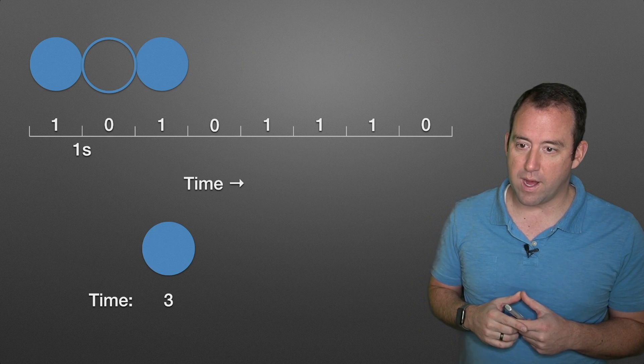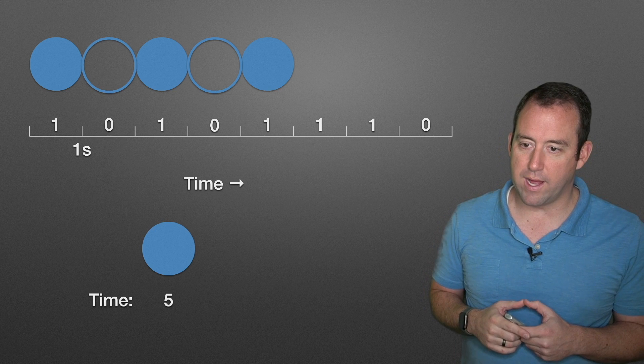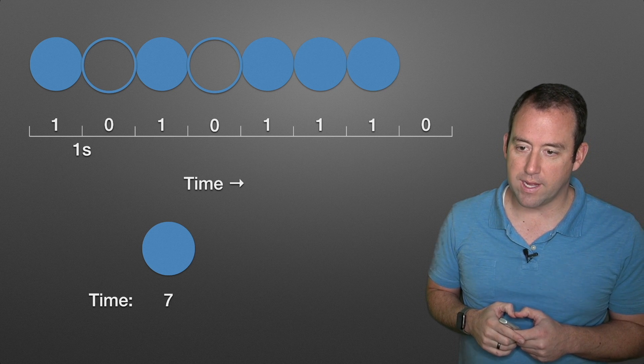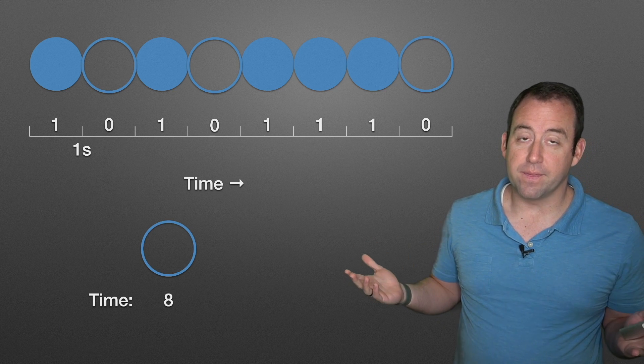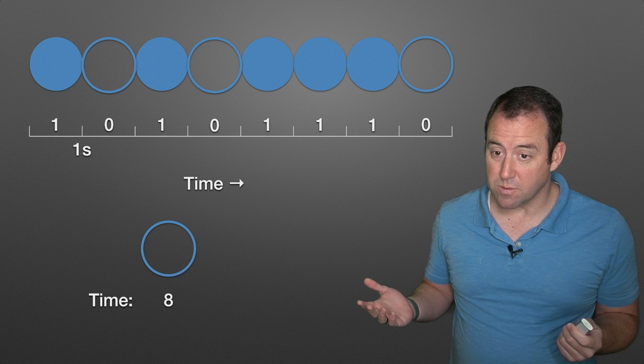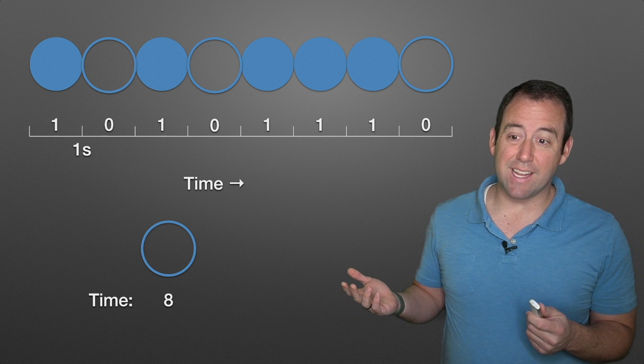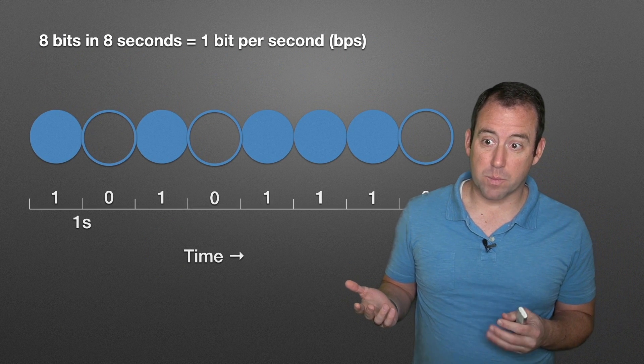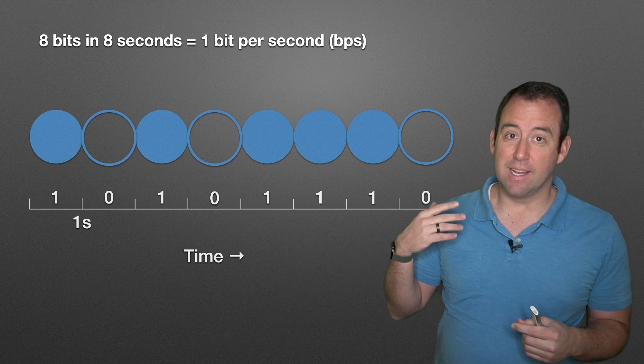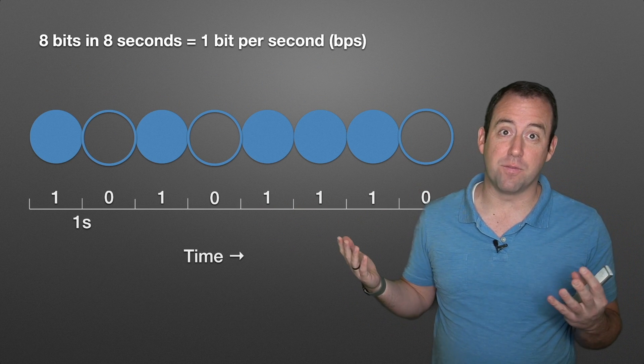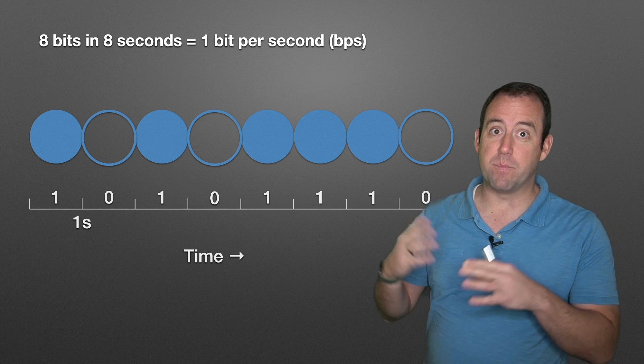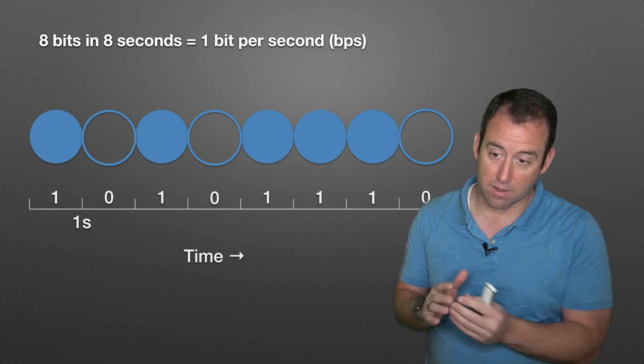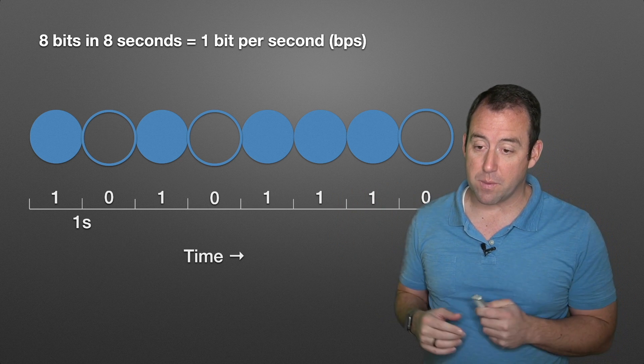So one, zero, one, zero, one, one, one, zero. That's our signal. And as we send that signal, we are sending one bit per second. Over eight seconds, we can send eight bits. That is one bit per second. That's how fast we are able to send it. That is the bandwidth of this communication channel. We are talking about sending one bit per second.